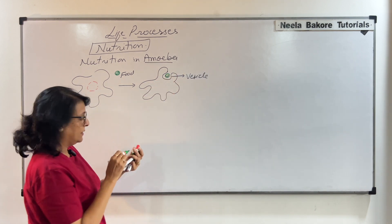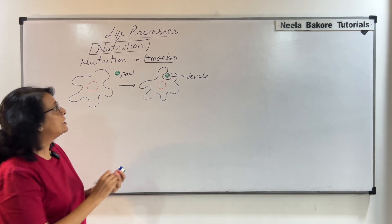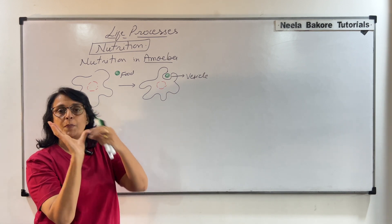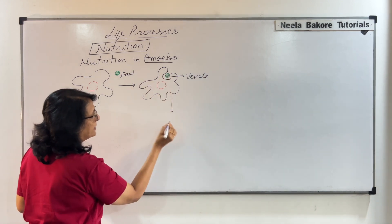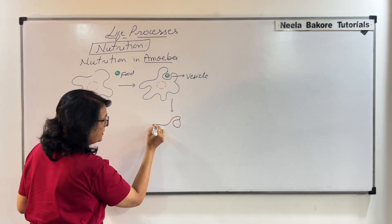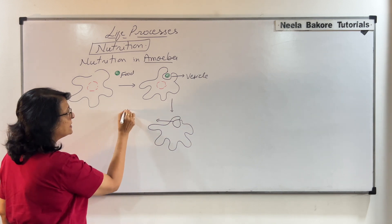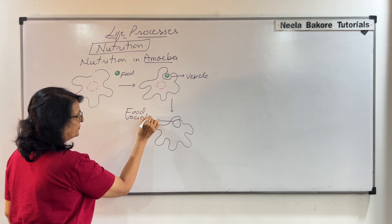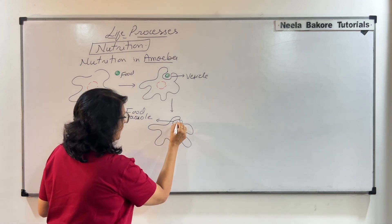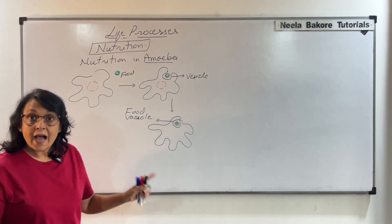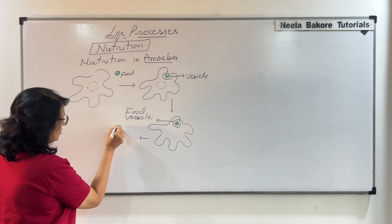The depression becomes deeper — it is like a membrane pinching in around the food particle. In the next stage, this vesicle is completely formed inside the amoeba. We now start calling this structure the food vacuole. The food is enclosed inside the food vacuole and will be digested inside the cell.